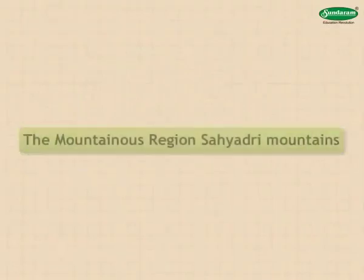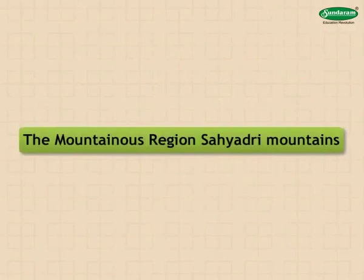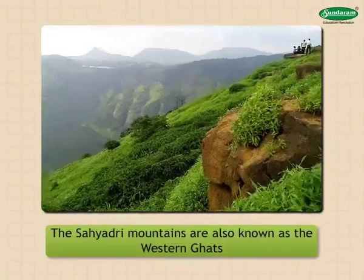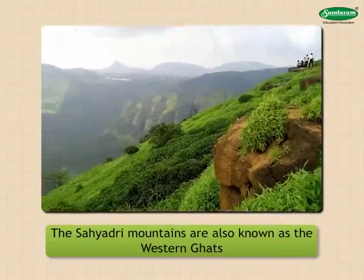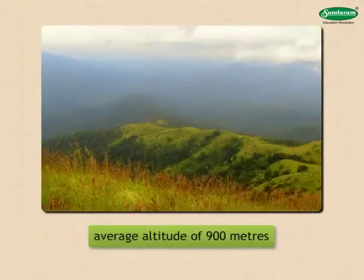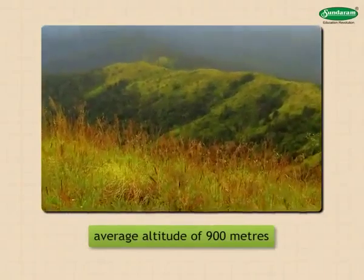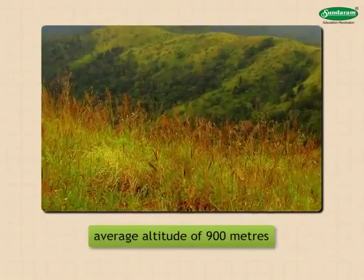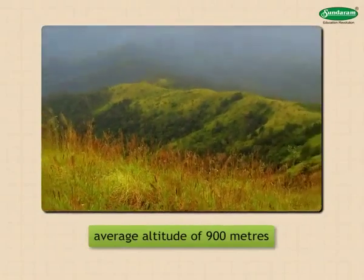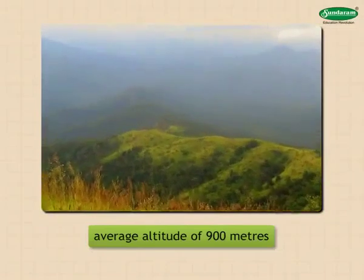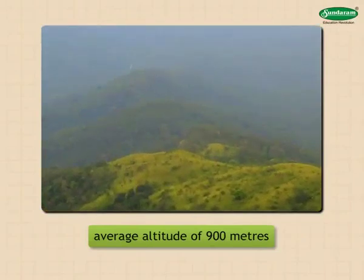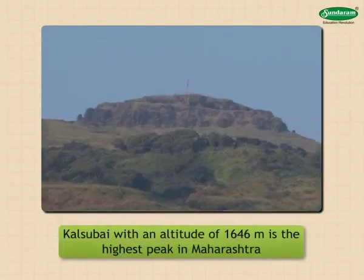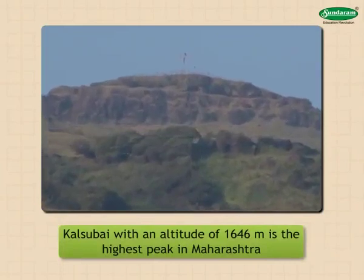Maharashtra physical geography: the mountainous region. The Sahyadri mountains, also known as the Western Ghats, lie parallel to the coast of Maharashtra and have an average altitude of 900 meters. The altitude generally decreases towards the north. This mountain spreads in the north-south direction; its western slopes are steep while the eastern ones are comparatively gentle. There are a number of peaks in this mountain.